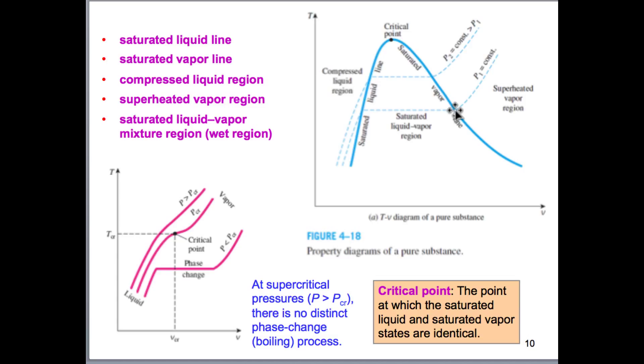If we continue to heat it, so we no longer have a liquid at this point, we'll have a superheated vapor in this region. And there's some interesting things to look at. For example, if we look at what's called the supercritical pressure.